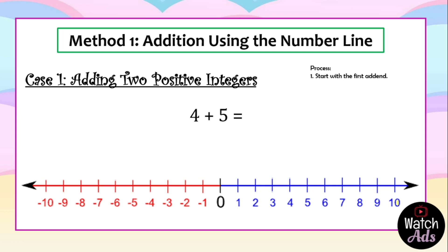For our process using the number line method, we start with the first addend, which is four. Four is positive — this is something we learned from early grades, from grade one and grade two, where we always added positive integers. We find where four is located on the number line. Since it is a positive integer it is always on the right side of the number line. We put a mark, then move to the second addend, which is five.